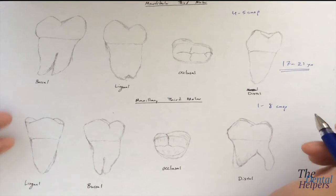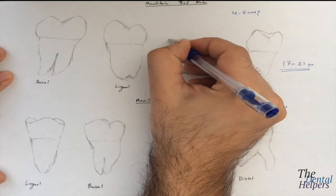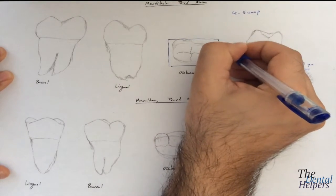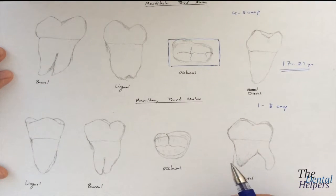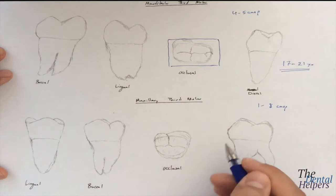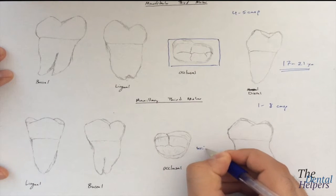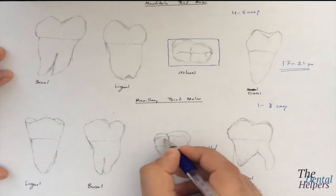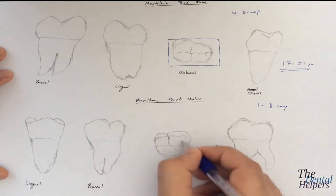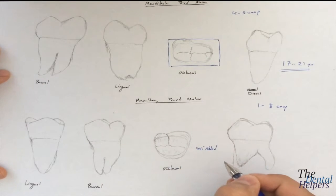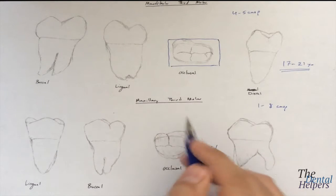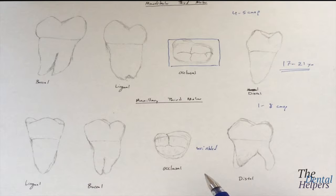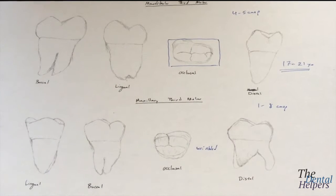In terms of their shape, the mandibulars are going to be pretty much square shaped. While the maxillary — the big thing that the books say is that it's wrinkled, meaning that from the occlusal view you're going to see that this tooth looks basically like a raisin. So it's kind of easy to distinguish between the two teeth, specifically that the maxillary has a very random morphology.